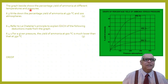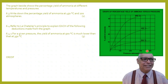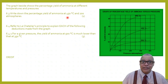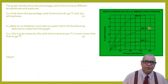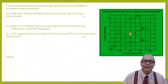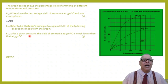Looking at the graph for 450°C at 200 atmospheres: finding the 450°C curve, moving to 200 atmospheres and reading across the y-axis, the yield is 20%. The answer to question 6.3 is 20%.